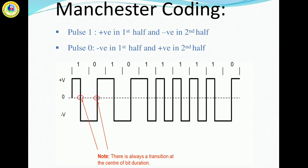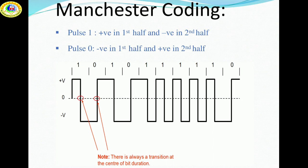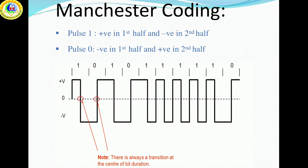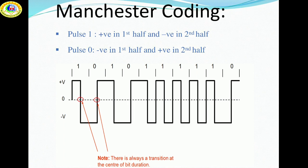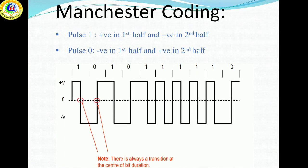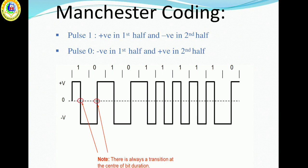Manchester. It is a line code in which the encoding of each data bit is either low then high or high then low for equal time.